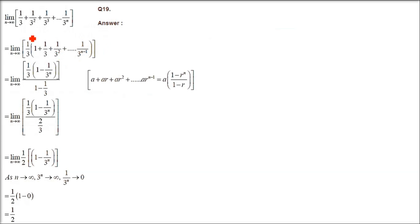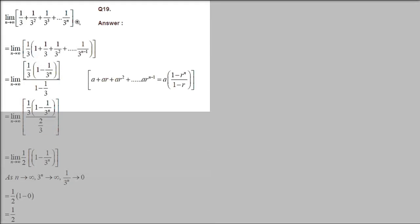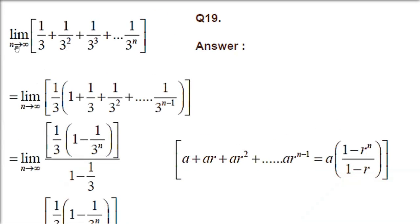Now this is question number 19. Limit n tends to infinity of 1/3 plus 1/3 squared, and this goes up to 1 over 3 to the power n. So if we apply n tends to infinity here directly to the last term, it will be 1 over infinity, that is 0. So we need to find the sum of all the previous terms.